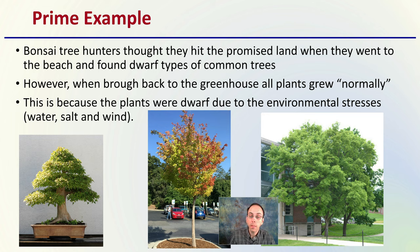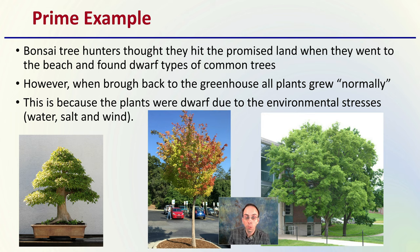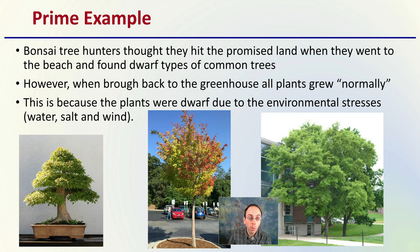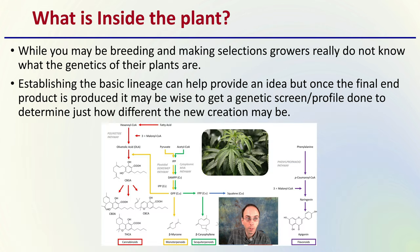We see the same example here: here's a bonsai tree in a very small container, here's a tree growing in a parking lot with a very limited root base, and here's a tree growing with a much more expansive root base. While these may all be the same variety or type of tree, you can see they can produce vastly different results. The same thing — maybe not to this extreme level — can also be seen in cannabis.